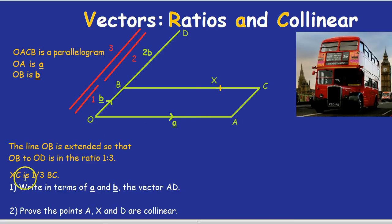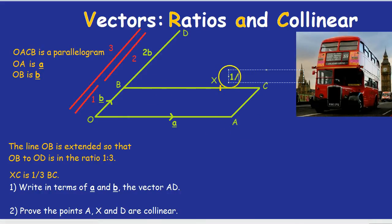They also said XC is 1 third of BC. Something quite similar, but they've stated it in a different way, perhaps to confuse us. So XC is 1 third of BC, but BC is the vector a, because we saw it's parallel. So XC would be 1 third of a.